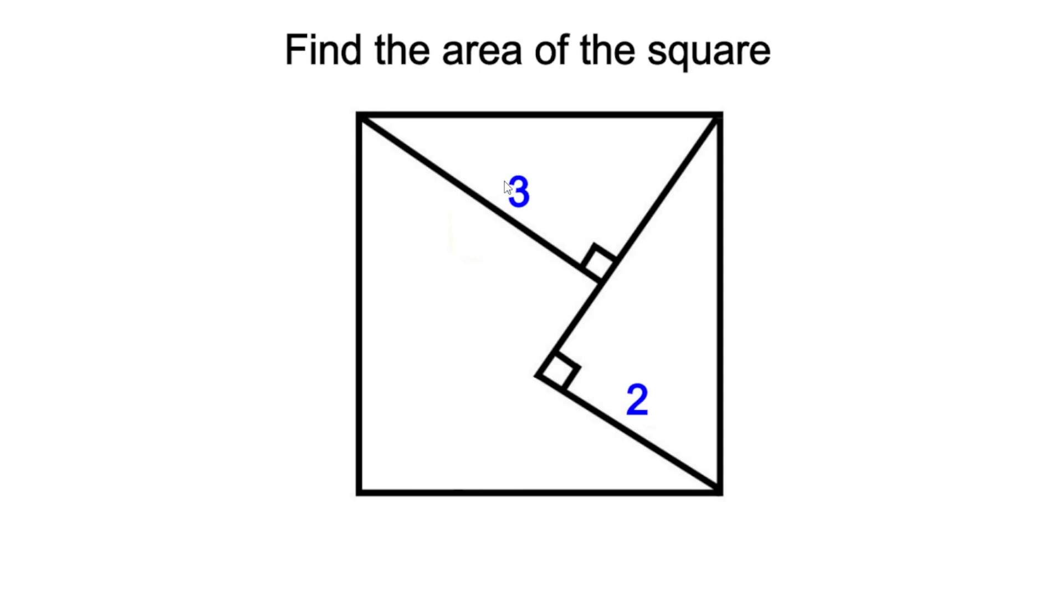We also know that the longer side of one of the triangles that forms the right angle has a value of 3, and that the shorter side of the other triangle that forms the right angle has a value of 2.